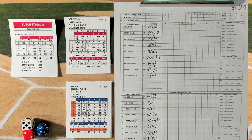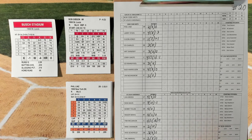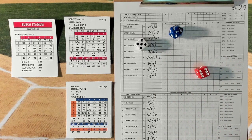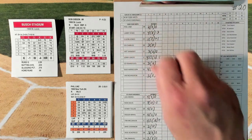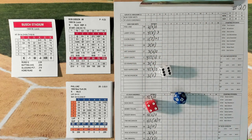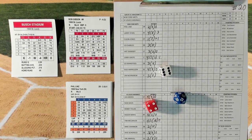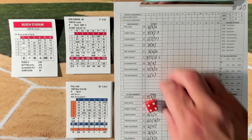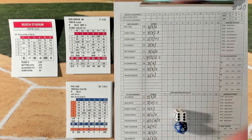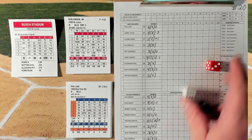Leading off for the Mets is Phil Lintz, followed by Larry Stahl and Cleon Jones. We get a 6-5, a range play, then a 4-6 — range play for the first baseman. Today's first baseman is Bobby Tolan, he's a 4. He makes the play.